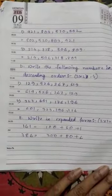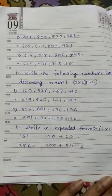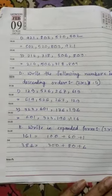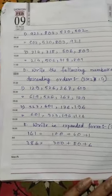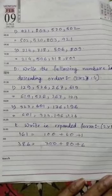And the descending order. 129, 526, 267, 619. The answer is 619, 526, 267, 129.